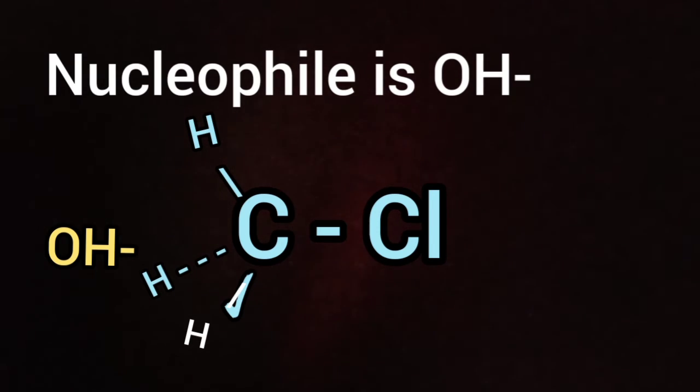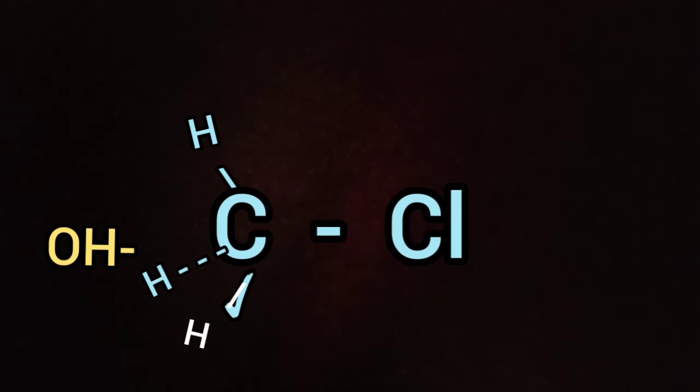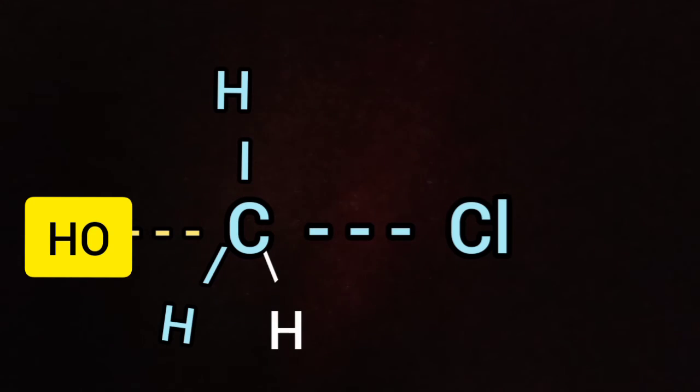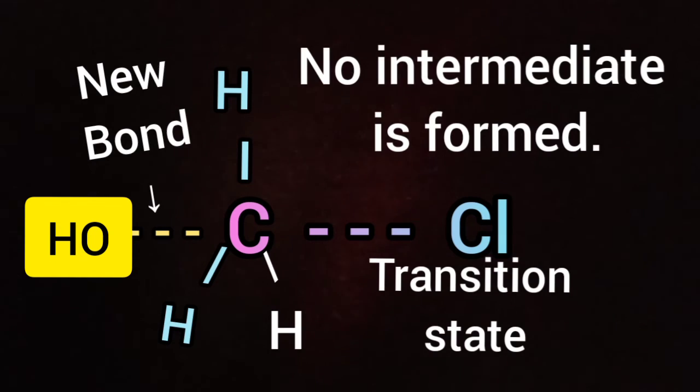When the nucleophile OH minus interacts with alkyl halide or methyl chloride, the C-Cl bond will break and a new C-OH bond will form. The formation of C-OH bond and breaking of C-Cl bond take place simultaneously in a single step. Here no intermediate is formed.